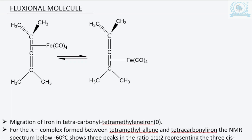Here I have taken one example: Fe(CO)4, the tetracarbonyl iron atom. There is a tetramethyl allyl system. At high temperature we get one peak, and when we decrease the temperature to minus 60 degrees Celsius it shows three peaks. I'm going to explain why.